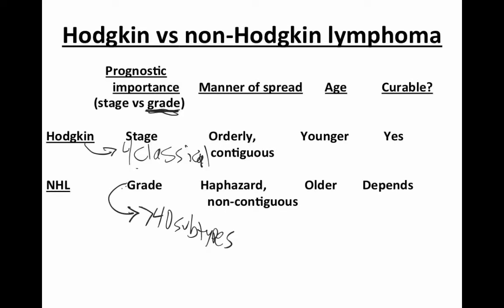Hodgkin lymphoma generally affects people in their 20s and 30s — a much younger age — whereas non-Hodgkin lymphoma affects older patients. The incidence particularly increases above age 50 to 60.